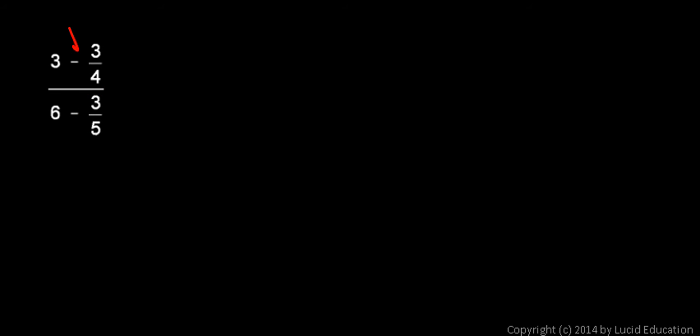But notice that there's an operation here, a subtraction there and there in the numerator and the denominator. To do this you have to remember this: the fraction bar groups the numerator and the denominator. So we have to do the operation here in the numerator and the operation there in the denominator first. So we'll get a number for the top and a number for the bottom, and then we'll divide the numerator by the denominator.